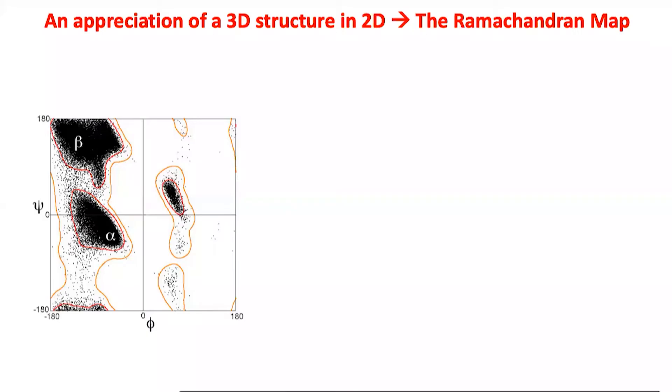I think myoglobin was the first structure, but the question was that was just one protein. There were hundreds and thousands of proteins which had been purified. Could we predict the structure of these proteins based on the linear sequence of the amino acids? And what GNR along with a few of his students did is they said let's start making models of proteins.